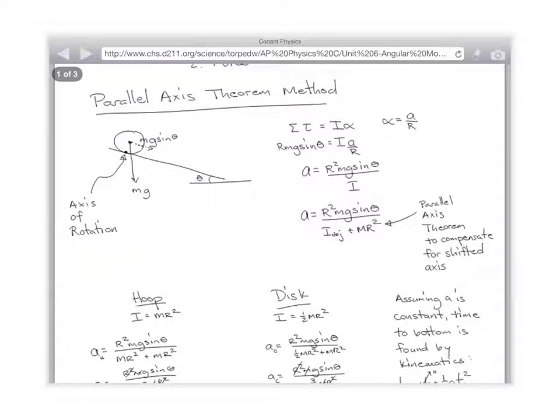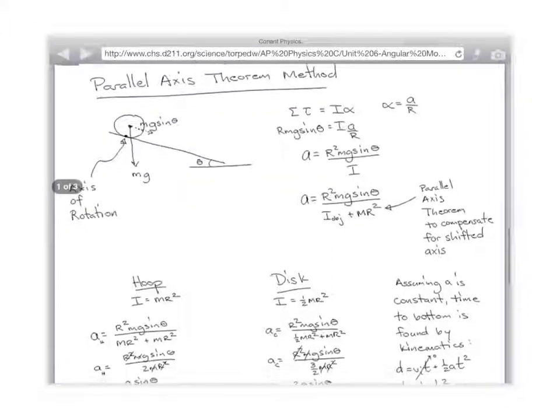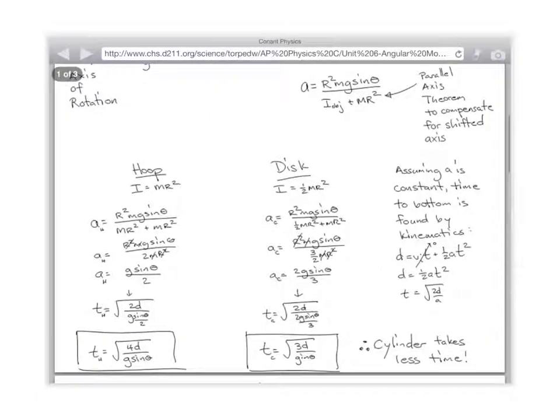This actually works for hoops, disks, balls, whatever. You just plug in whatever I value you need for the object. So that was pretty simple. Here's, I actually did the math, the amount of time it's going to take to get to the bottom. For the hoop, I used mr squared, and for the disk is one half mr squared.